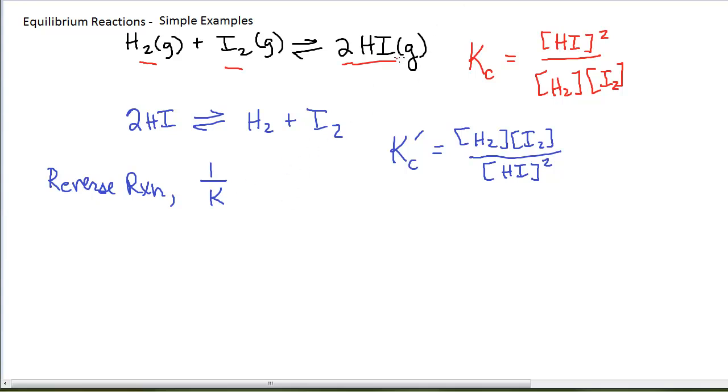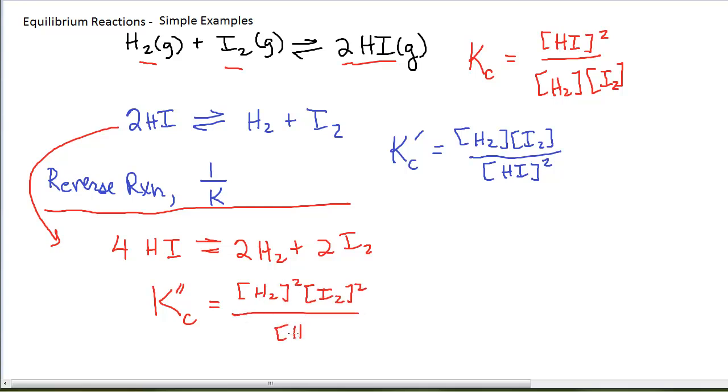If, for whatever reason, I needed to write the reaction, let's start with this blue one, and let's say I needed to write the reaction as 4HI is in equilibrium with 2H2 plus 2I2. Then look at what happens to the equilibrium constant. If I write this new equilibrium constant expression, I end up with H2 squared times I2 squared, all divided by HI to the fourth.